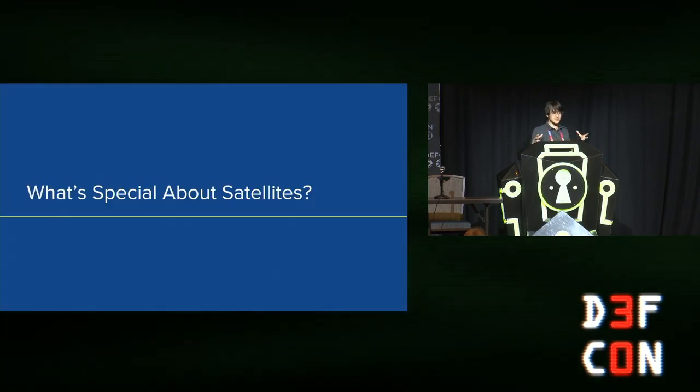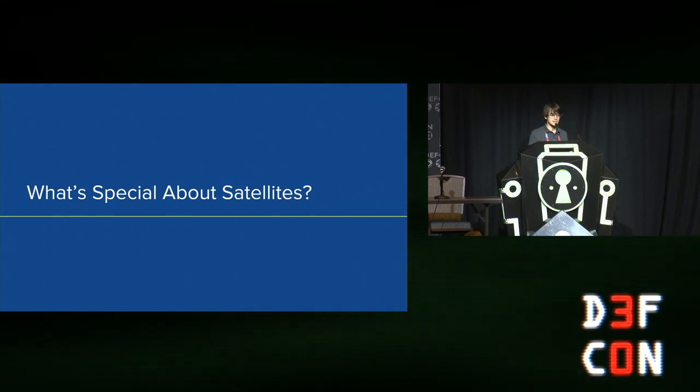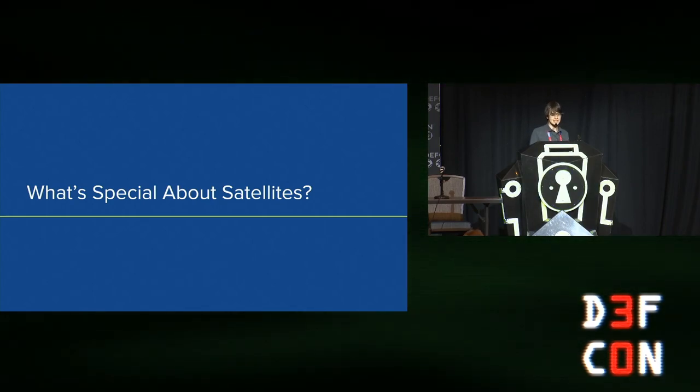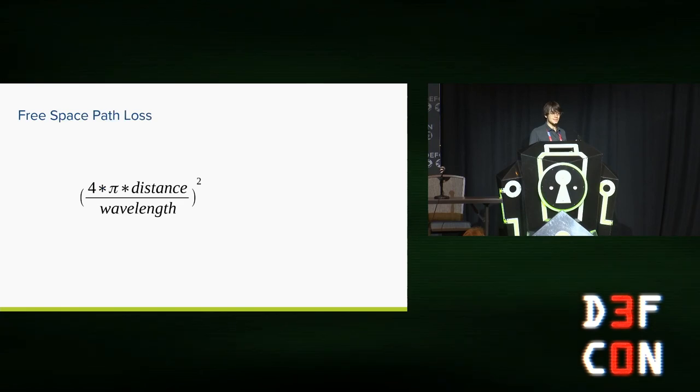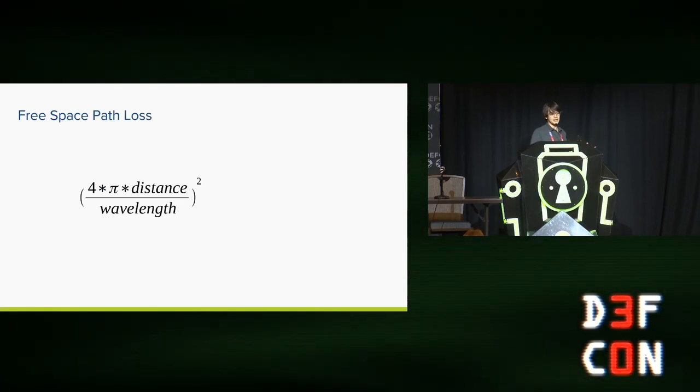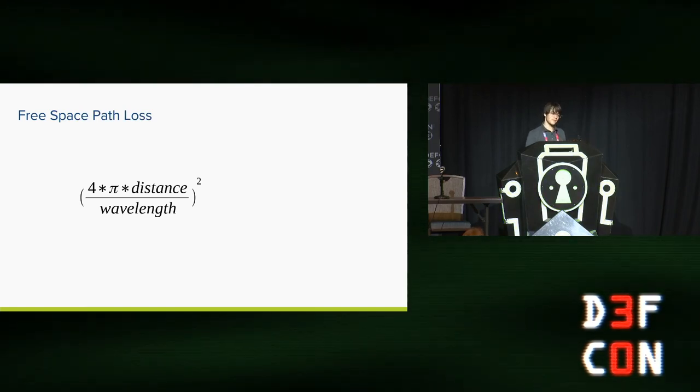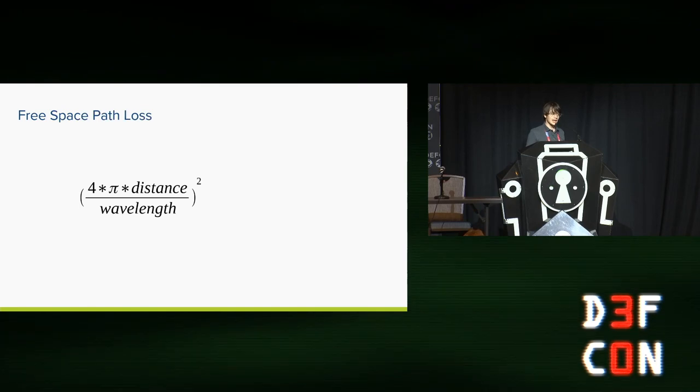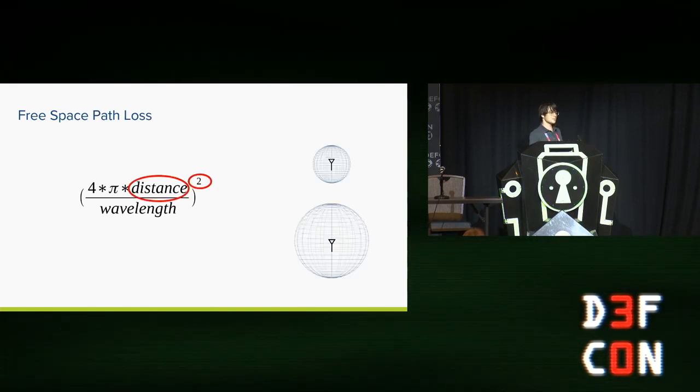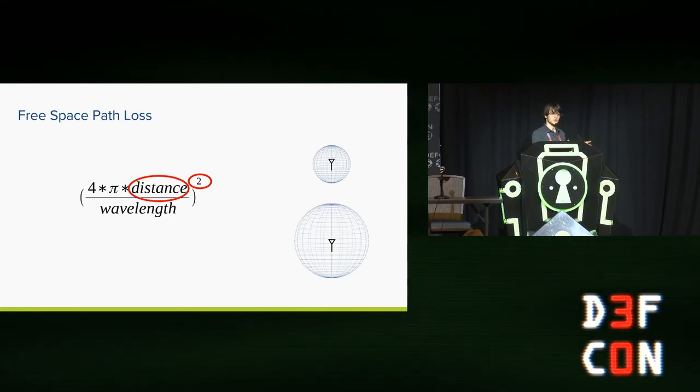So what's special about satellites in the context of radio jamming? What makes it a particularly interesting area to think about jamming attacks? I think one of the most important numbers in satellite radio communications is something called free space path loss. And it's expressed by this formula here. It's basically how much weaker a radio signal gets the further away from a transmitter you are. And you don't have to worry about the numbers, but it's a square of the distance is the important thing. So every step further from the antenna you go, the signal gets much, much weaker.